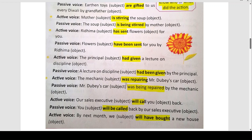The mechanic was repairing Mr. Dubey's car. Mechanic हमारा subject है, repairing का action कर रहा है, Mr. Dubey's car जो हमारा object है। So yes, this sentence is in active voice. Passive voice में: Mr. Dubey's car was being repaired by the mechanic. Mechanic हमारा जो object है, वो subject के ऊपर कुछ काम कर रहा है — इसलिए यह passive voice में हो जाता है।